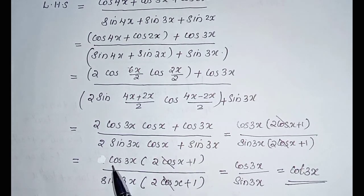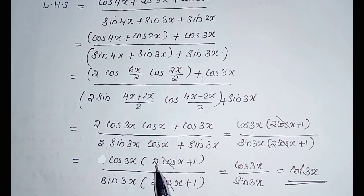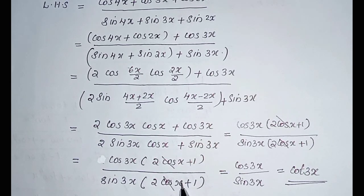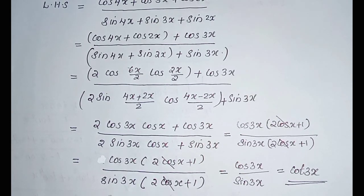We can take common terms outside: cos 3x times (2 cos x plus 1) in numerator, and sin 3x times (2 cos x plus 1) in denominator. Here, (2 cos x plus 1) is common to both numerator and denominator. We cancel this term. Then we got cos 3x divided by sin 3x, that is equal to cot 3x. That is RHS.